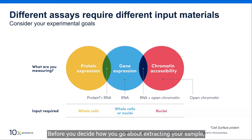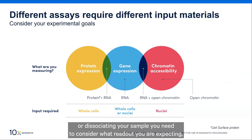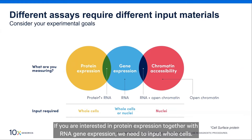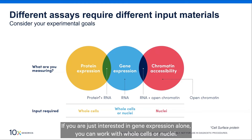Before you decide how to extract or dissociate your sample, you need to consider what readout you're expecting — what you'd like to measure — in order to decide whether you're extracting whole cells or nuclei. If you're interested in protein expression together with RNA gene expression, you need to input whole cells. If you're just interested in gene expression alone, you can work with whole cells or nuclei.